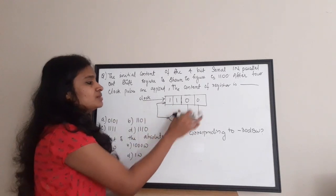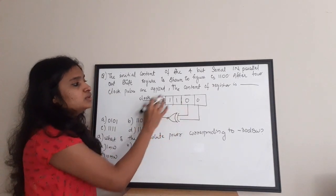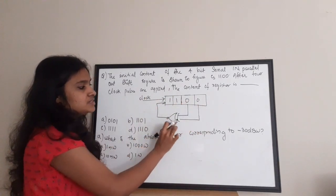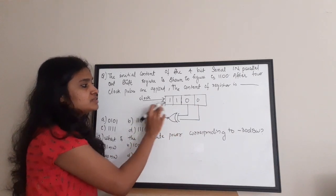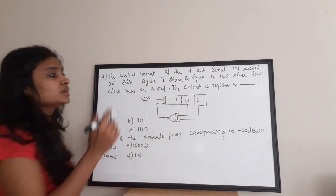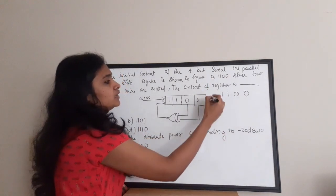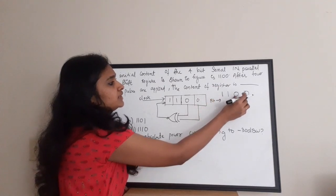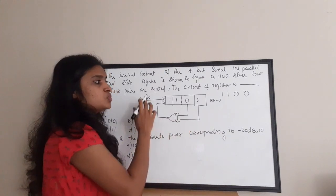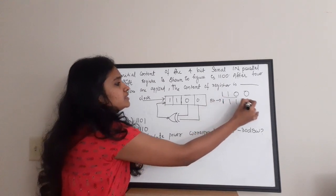This shift register has some logic connected — specifically an XNOR gate. The content is loaded by first taking the XOR of the two last bits, then taking the NOT, and that bit is loaded to the first position while all other three bits shift to the right. The initial content is 1, 1, 0, 0. During the first clock cycle, taking the XOR of the last two bits gives 0, and taking the NOT gives 1. So the first bit is 1, and the remaining three bits shift: 1, 1, 0.